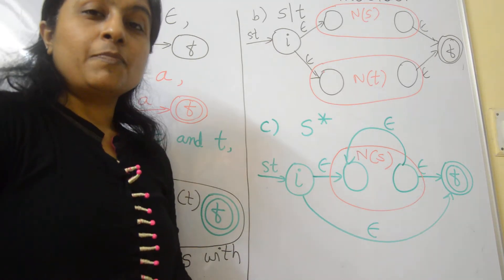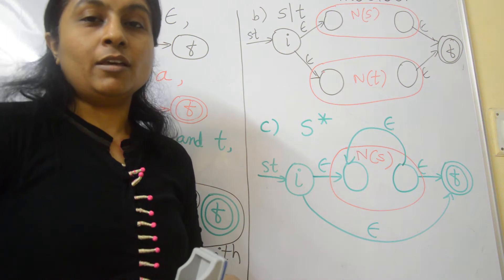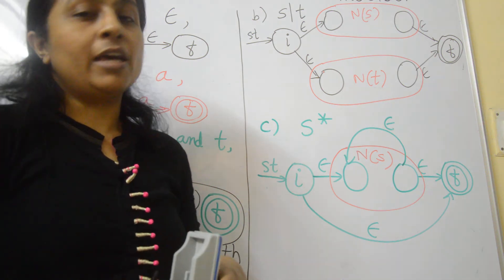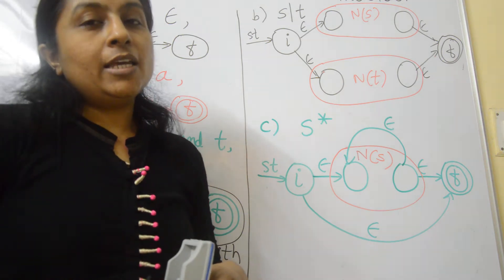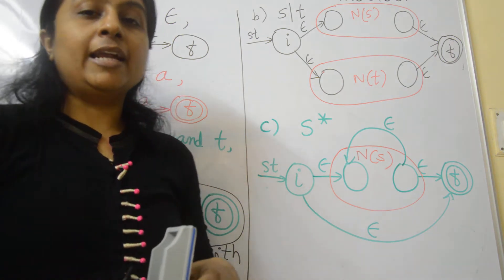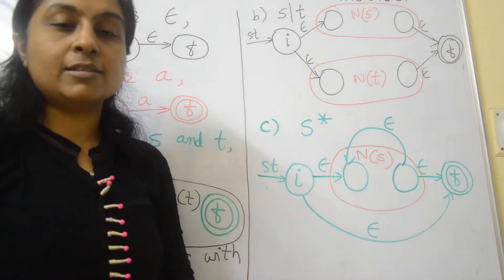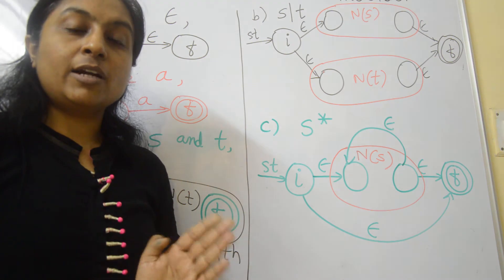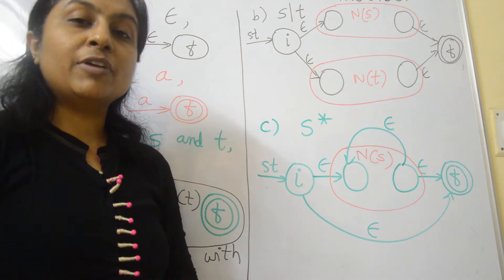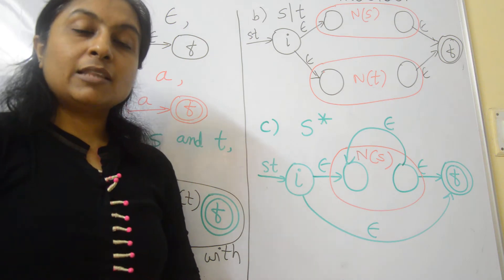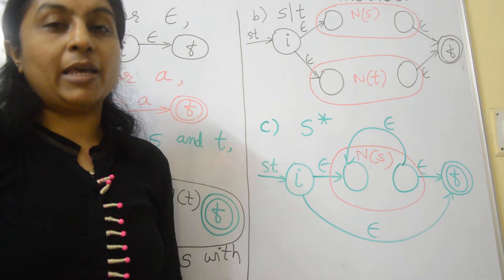To convert regular expression to NFA or DFA, we use various methods. DFA is faster in execution, and to convert a regular expression into DFA, we have two methods. The first method is to convert the regular expression to NFA and then convert that NFA to DFA. The second method is to directly convert a regular expression to DFA using the syntax tree method.